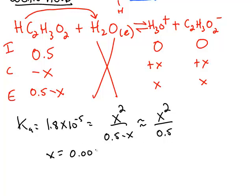If you use the approximation, x turns out to be 0.003, which is less than the 5% check, so we didn't have to use the quadratic formula.